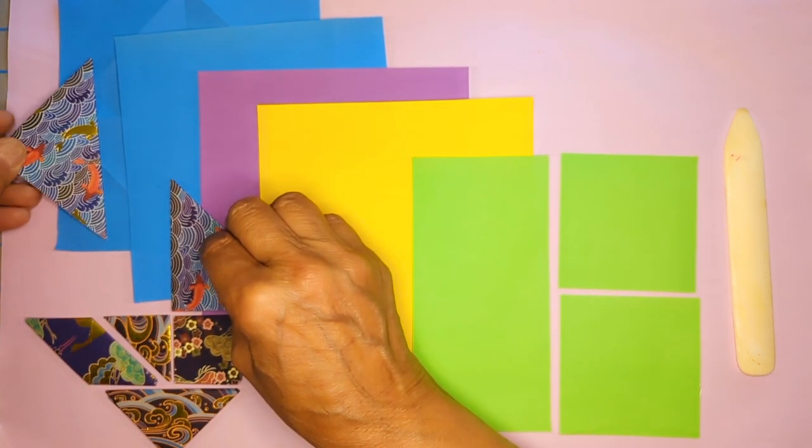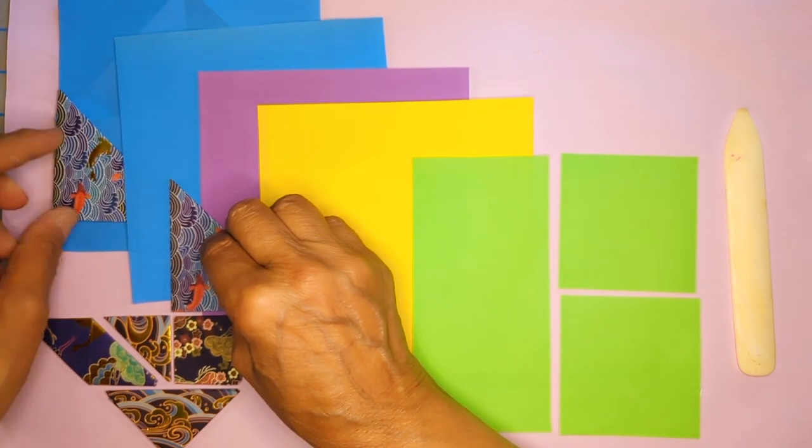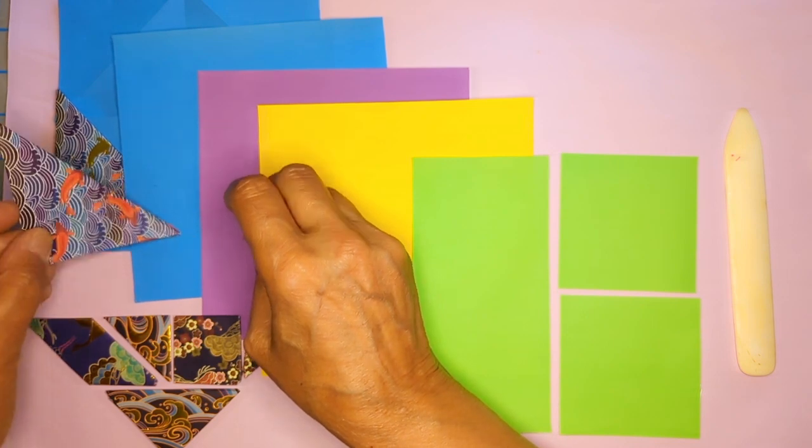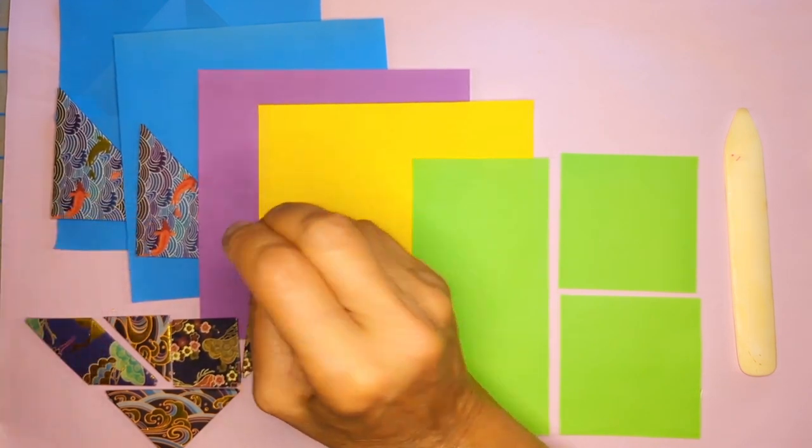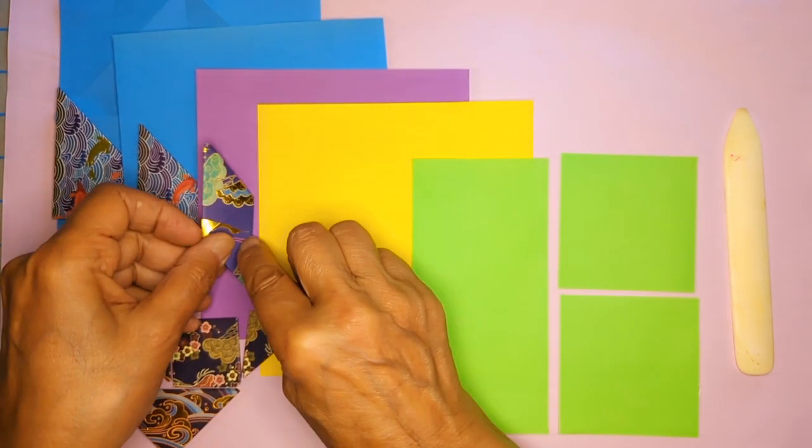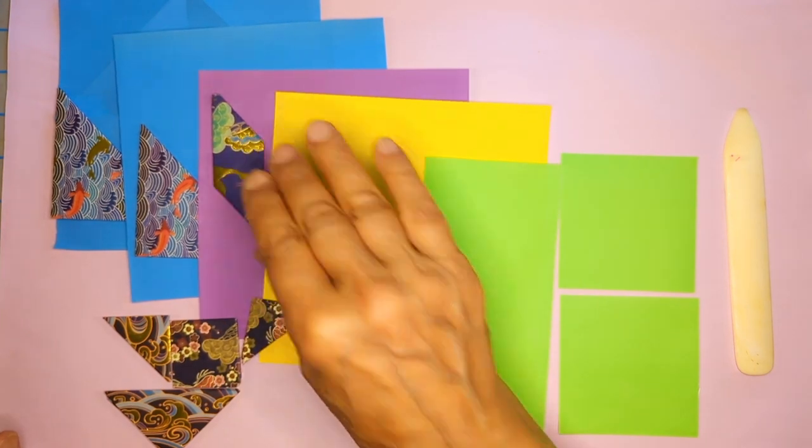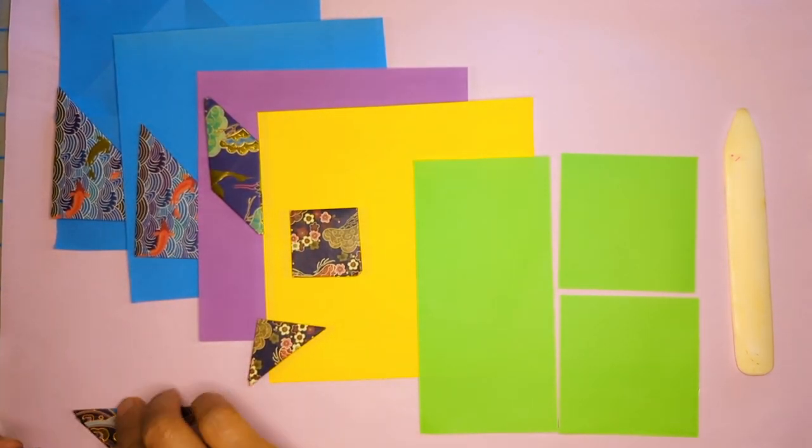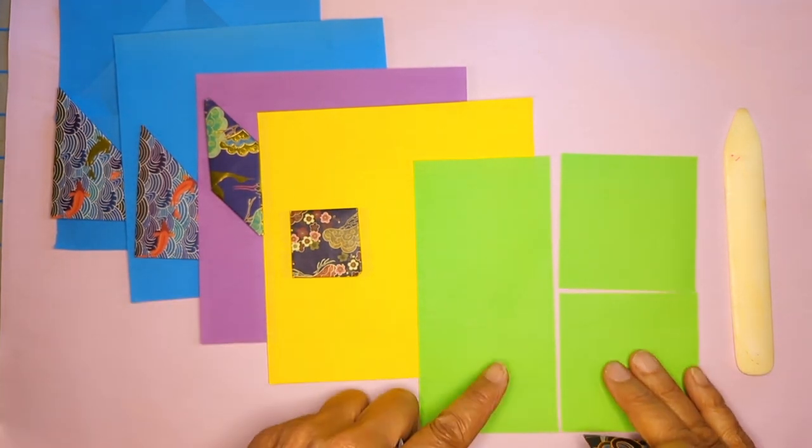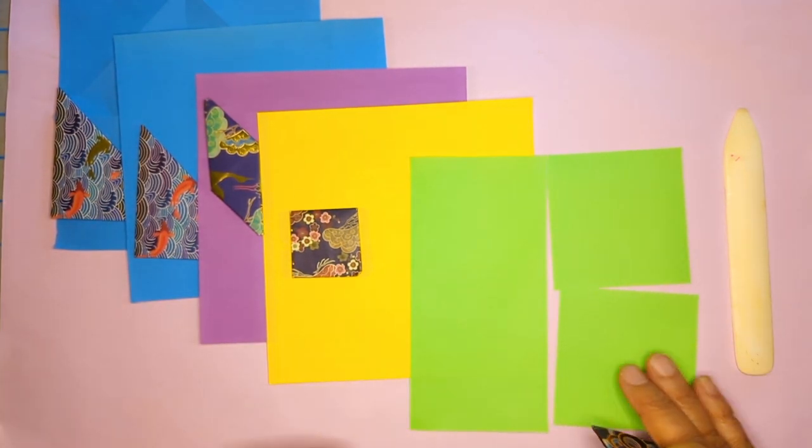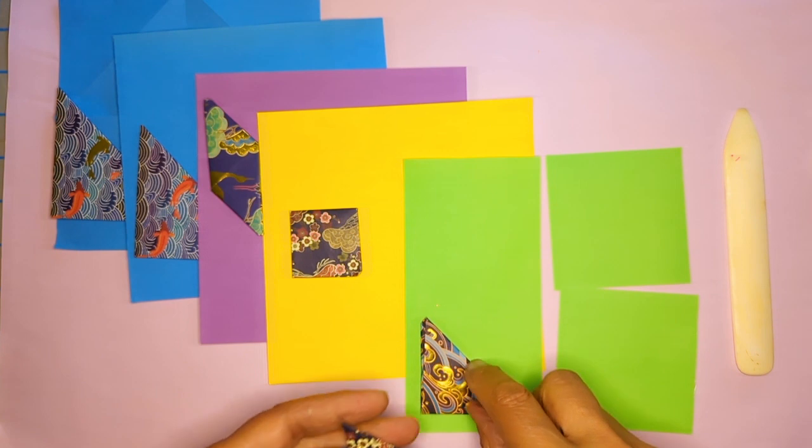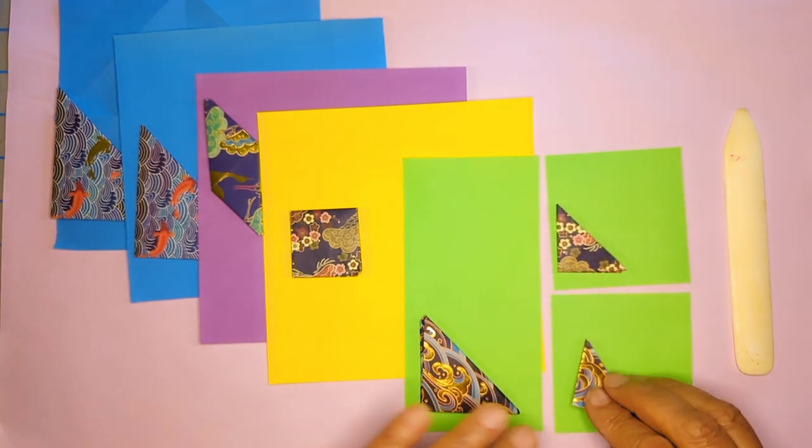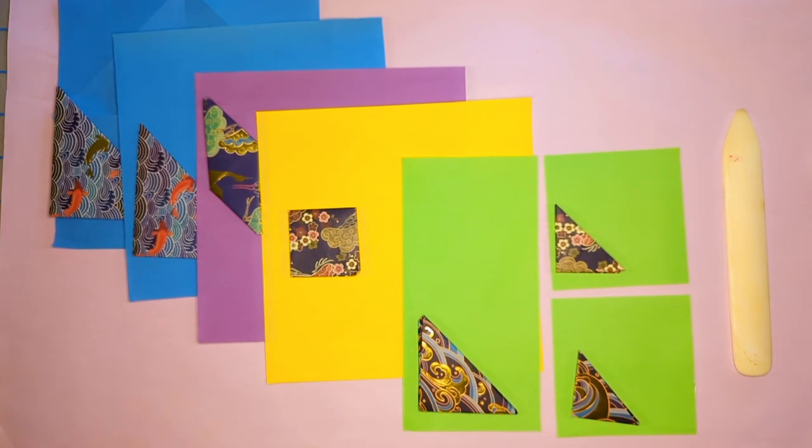You need one for each of the large isosceles right triangles. You need one for the parallelogram. You need one for the square. And you need one that's divided up into three pieces for the medium isosceles right triangle and the two small ones. Okay, so that's what you need to start with.